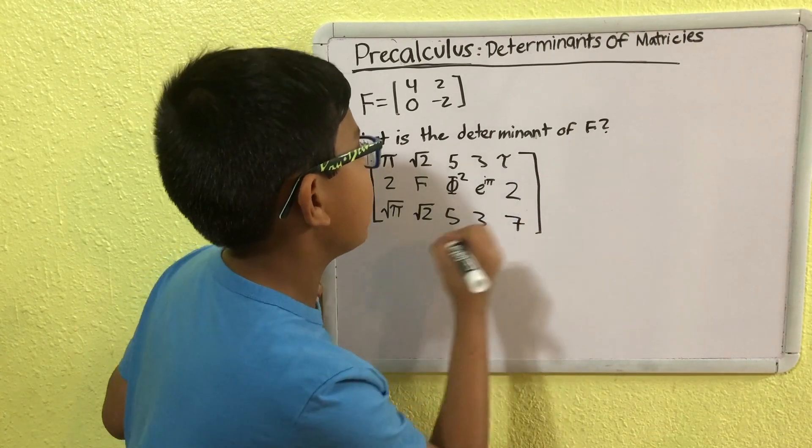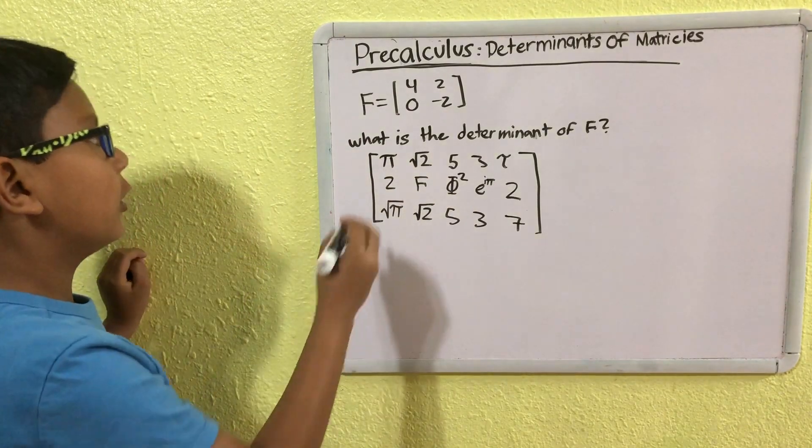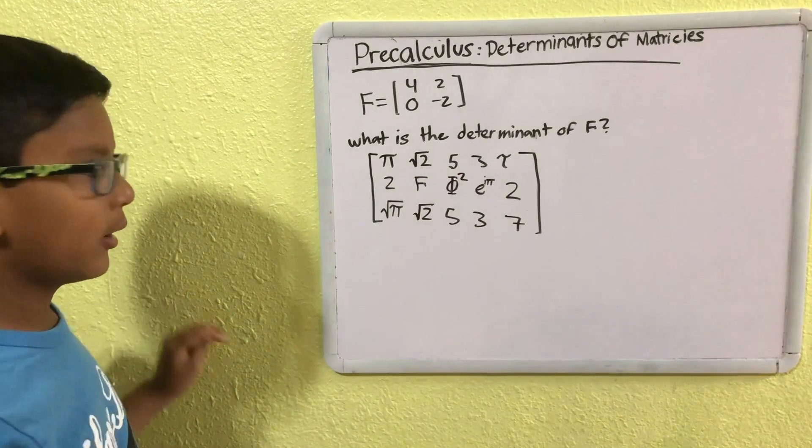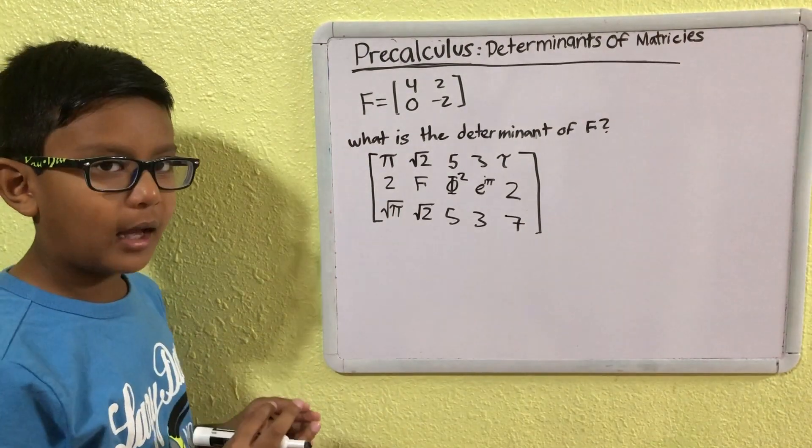Now, this is a matrix. Don't worry if you don't know about pi or square root 2 or all these other numbers. This is just an example.